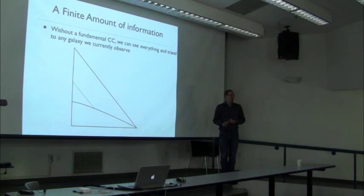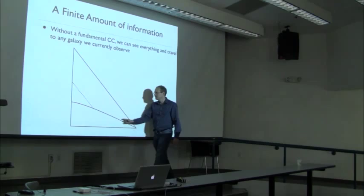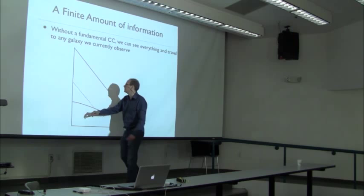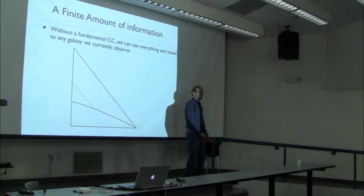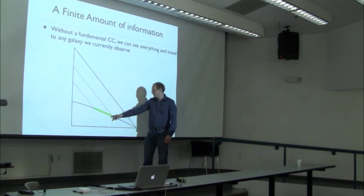Now let's get even more speculative and ask what in principle limits our knowledge. Without a cosmological constant, here is the Penrose diagram for a Robertson-Walker universe. Here's the surface of last scattering, and here I am today looking back — my past light cone hits the surface of last scattering as a dot on this diagram, which is really a sphere. But I can just wait: my past light cone will encompass more and more of the surface of last scattering, and after an arbitrarily long time I'd see an infinite total volume.